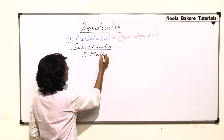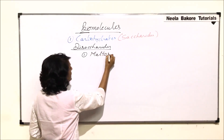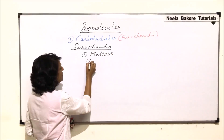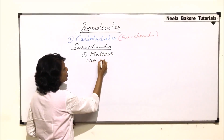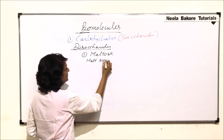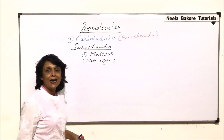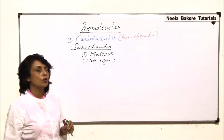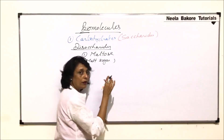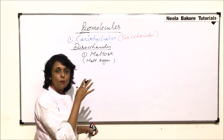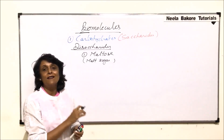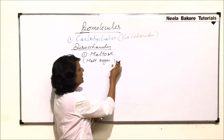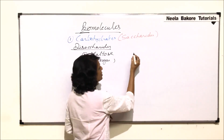The first one we are talking about is maltose, which is commonly known as malt sugar. It is a disaccharide and it is made up of two glucose molecules. To understand the bond formation, we will draw the ring structures — it is glucose and glucose.